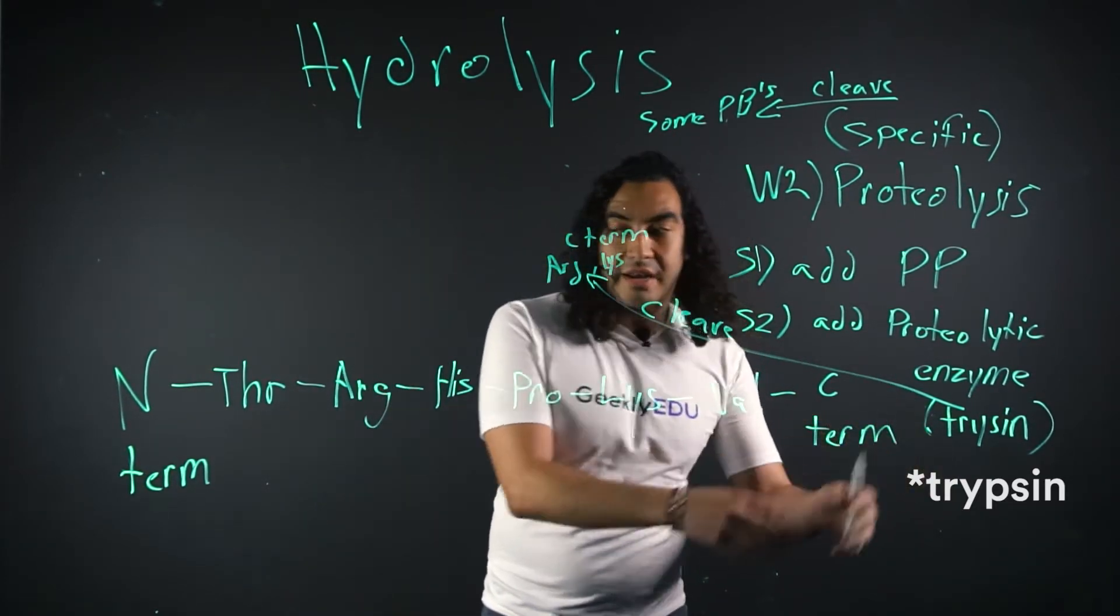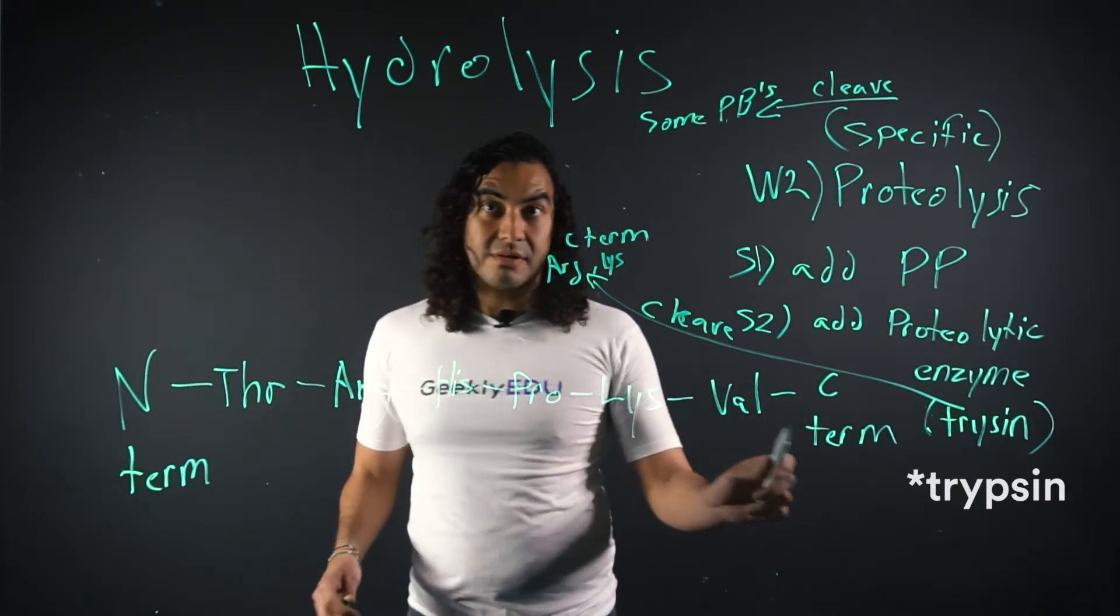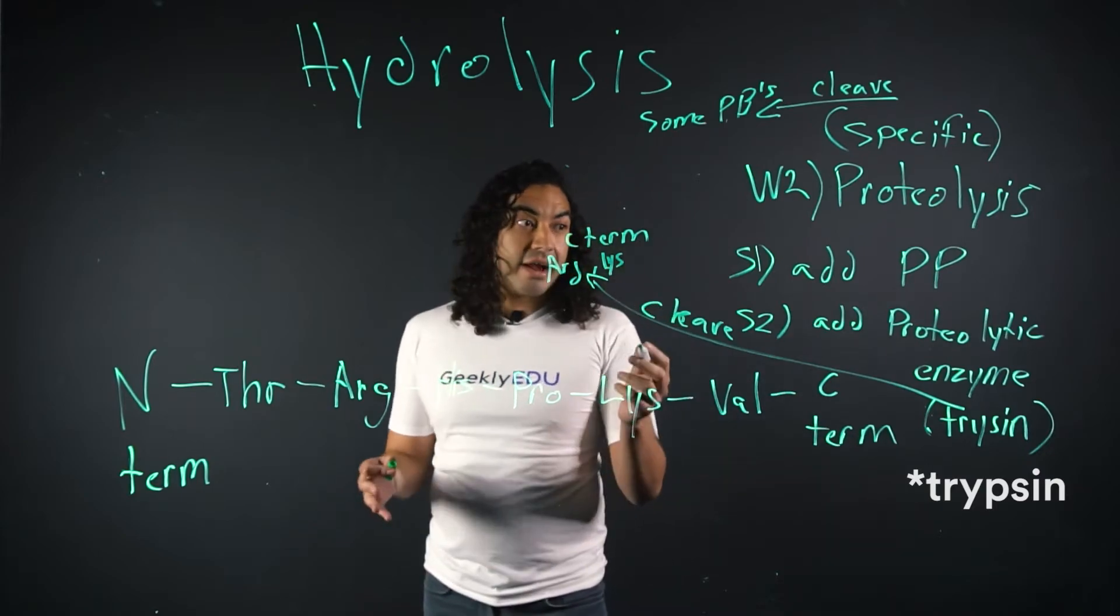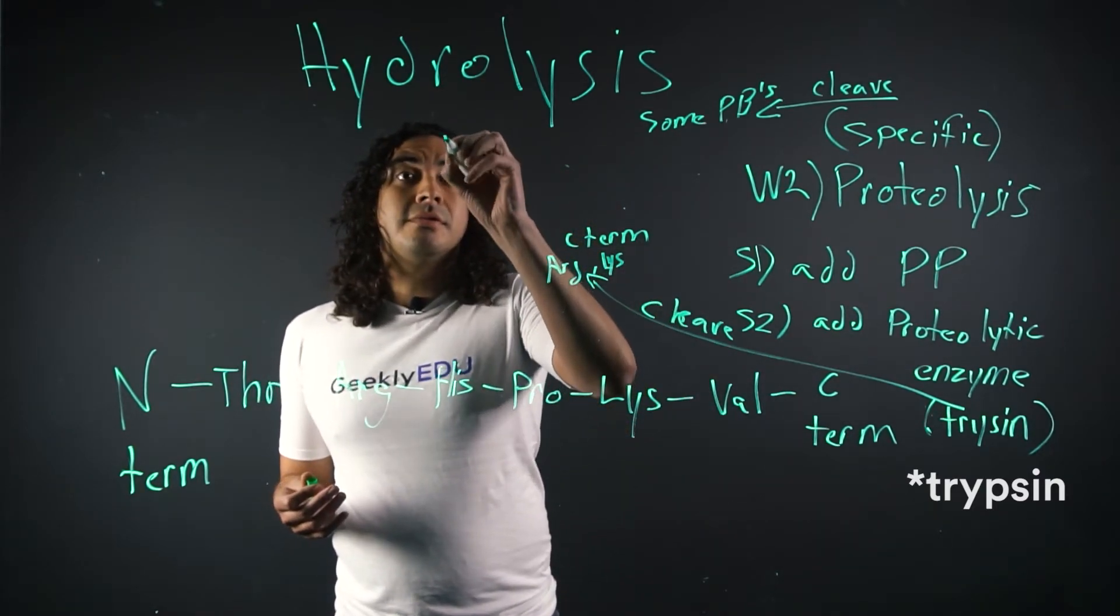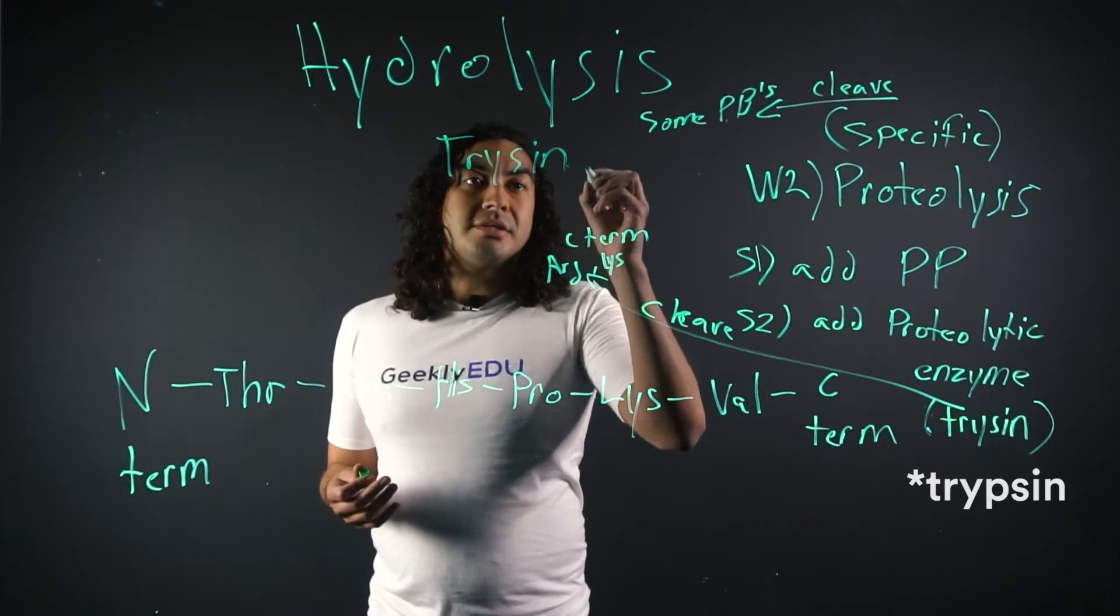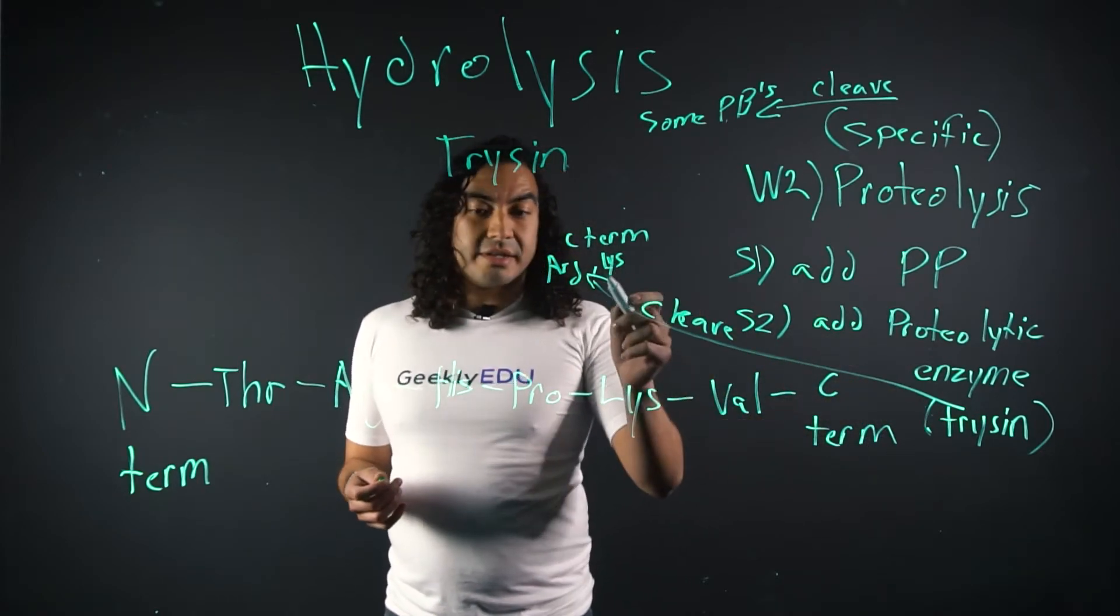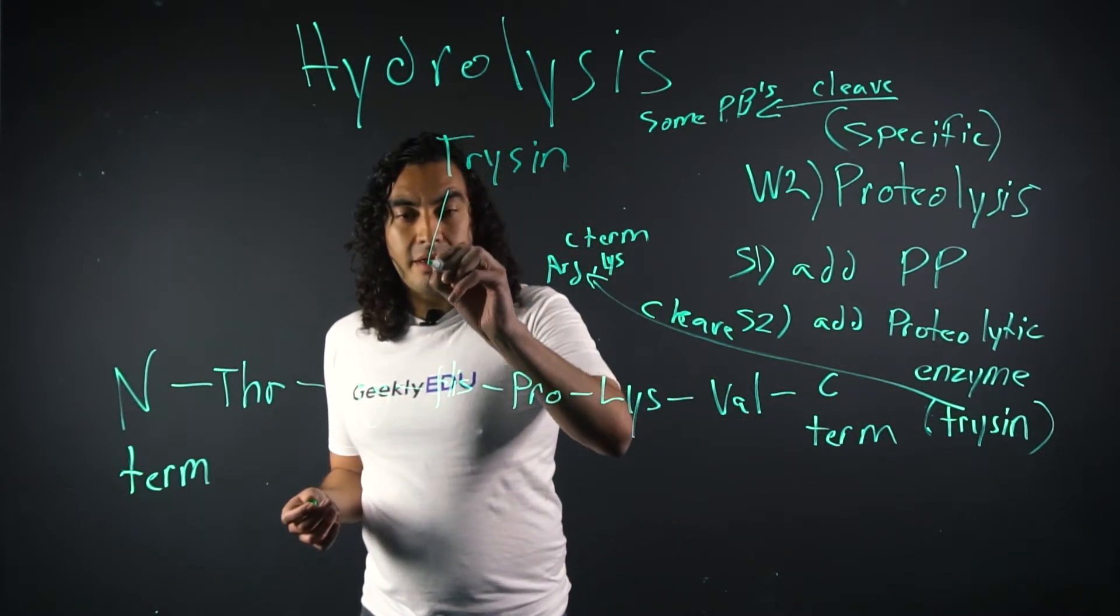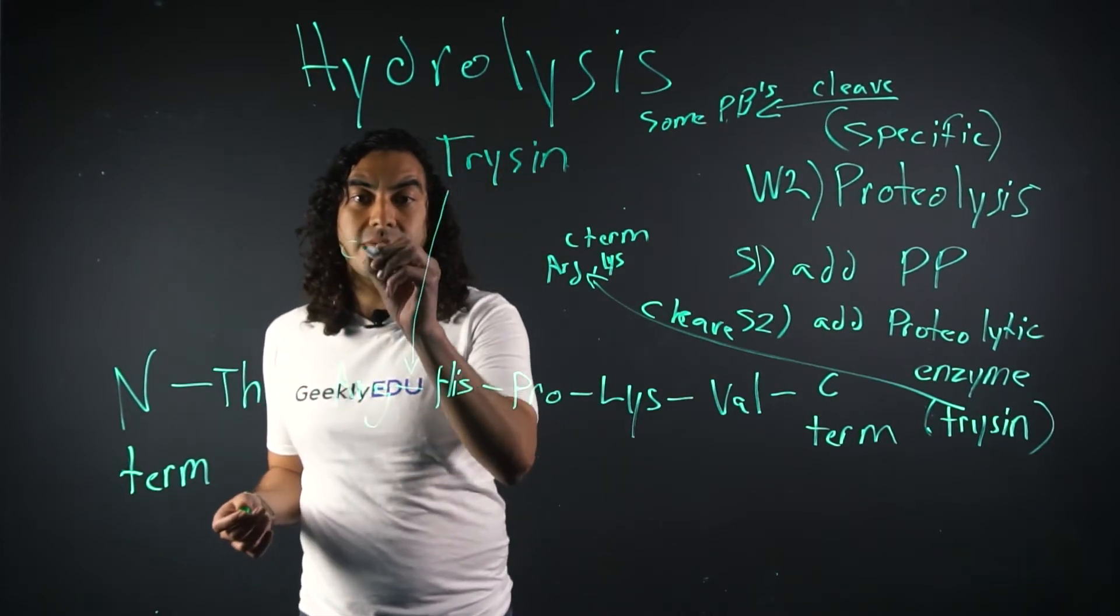So C-terminal side. So this side, not the N-terminal, the C-terminal side. So these are all peptide bonds, these little lines that I drew in. So let's add our trypsin so we can visualize this and see what the heck is going on. So let's add our trypsin. And like I said, trypsin is going to cleave here on the C-terminal of this peptide bond. So we're going to cleave here.